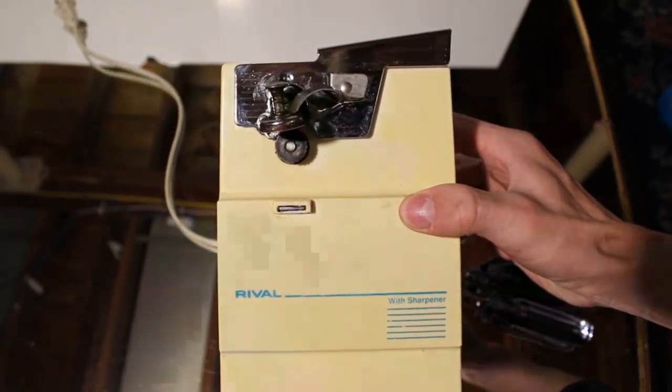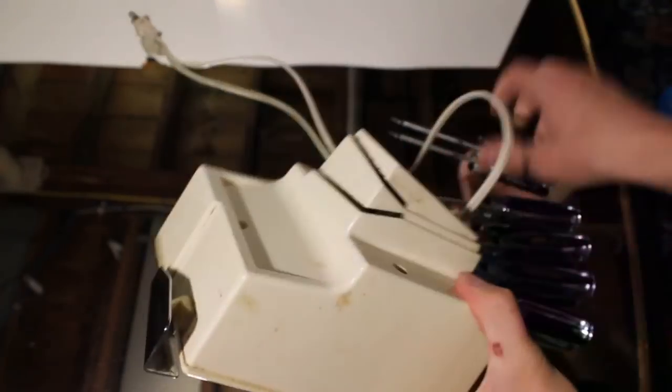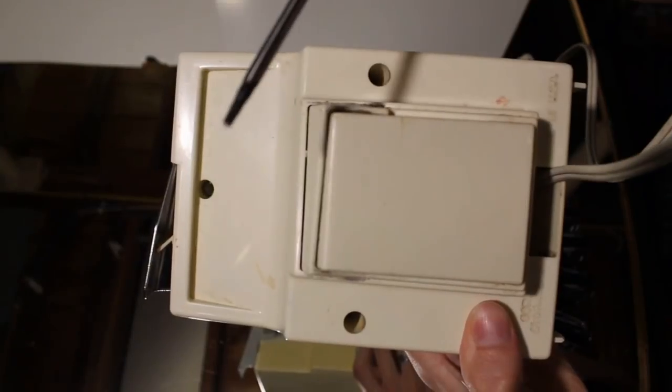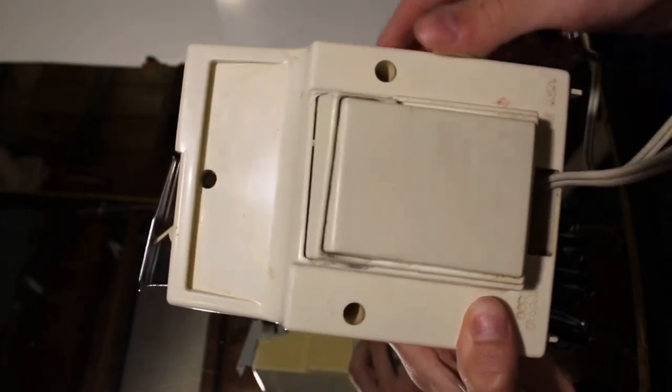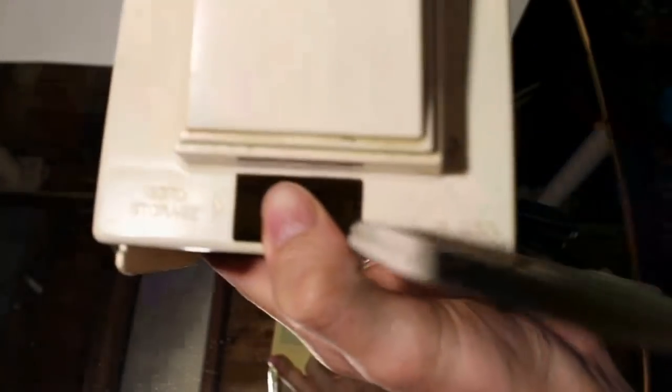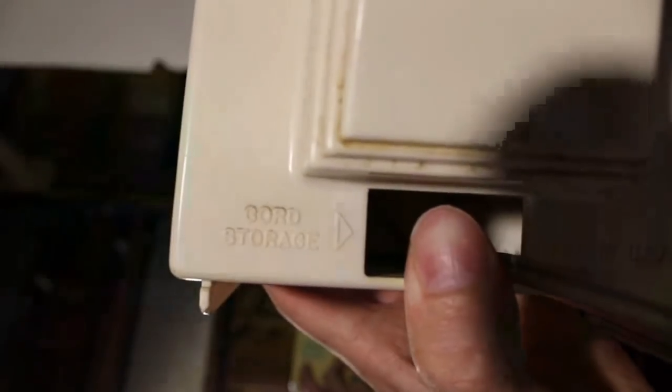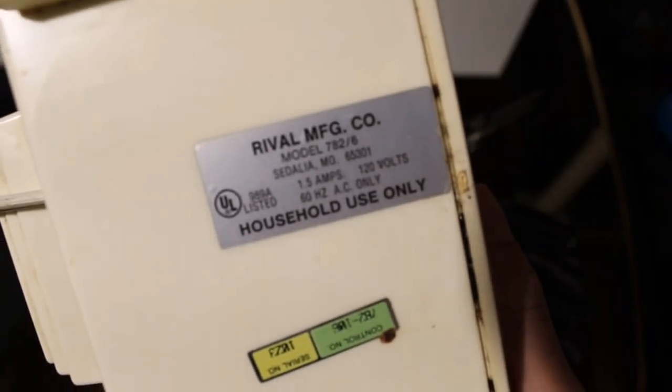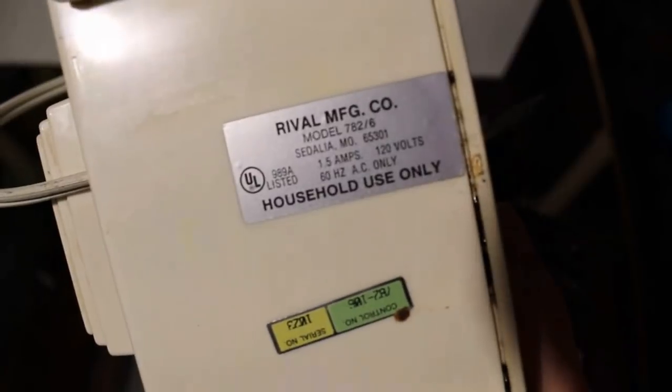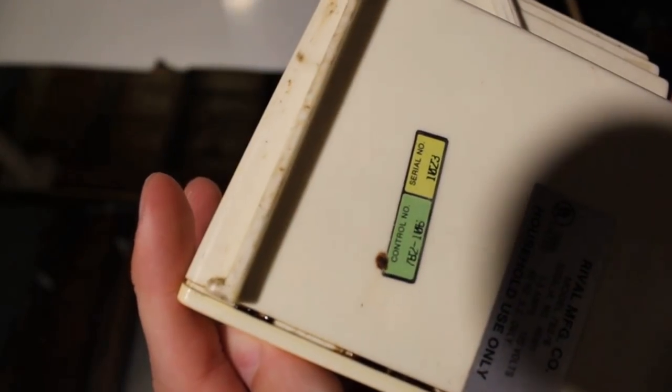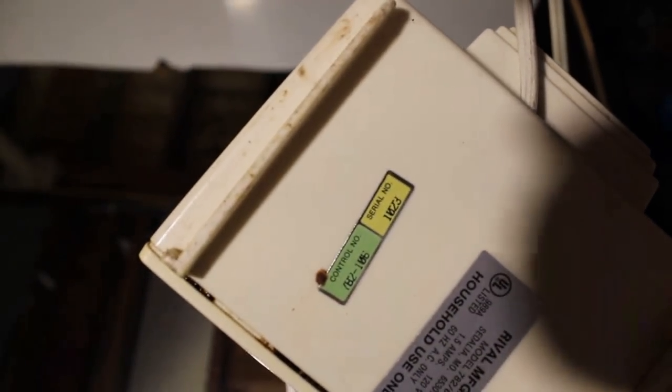Hey everyone, today we're going to be seeing what's inside of this old can opener. All the screws in the back have a star screwdriver bit that I'll be using. It's made in the USA and has a cord storage compartment. I'm going to show all the tags in the back. It's got its own serial number, so let's get started.